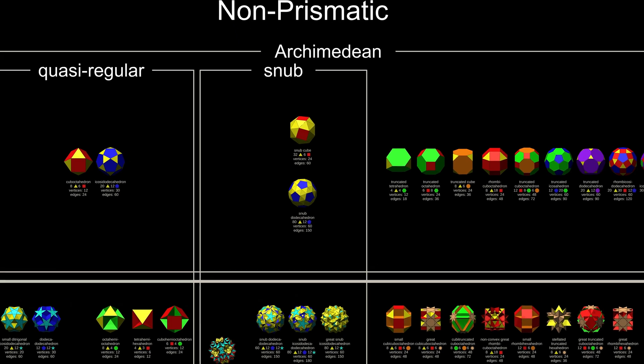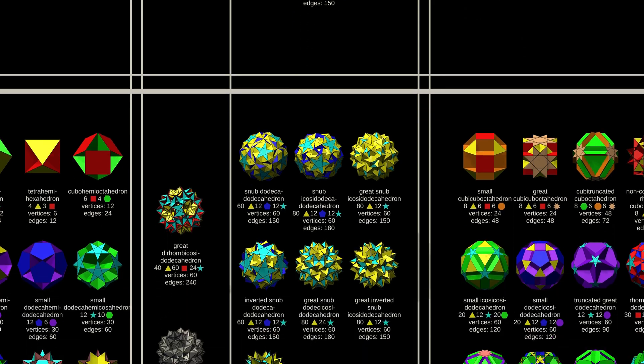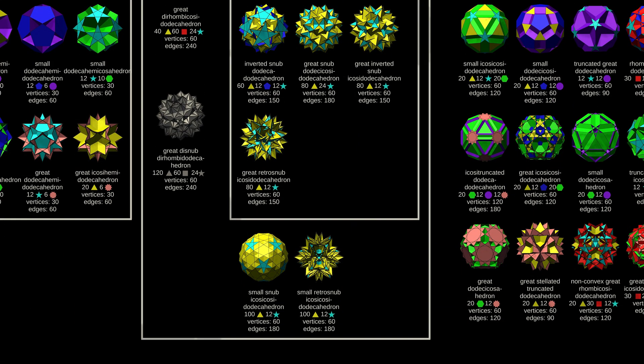One interesting subcategory of these is the snub polyhedra. There are only two convex snubs, both of which are chiral, not mirror-symmetric, but there are many more non-convex snubs, several of which do have mirror-symmetry.